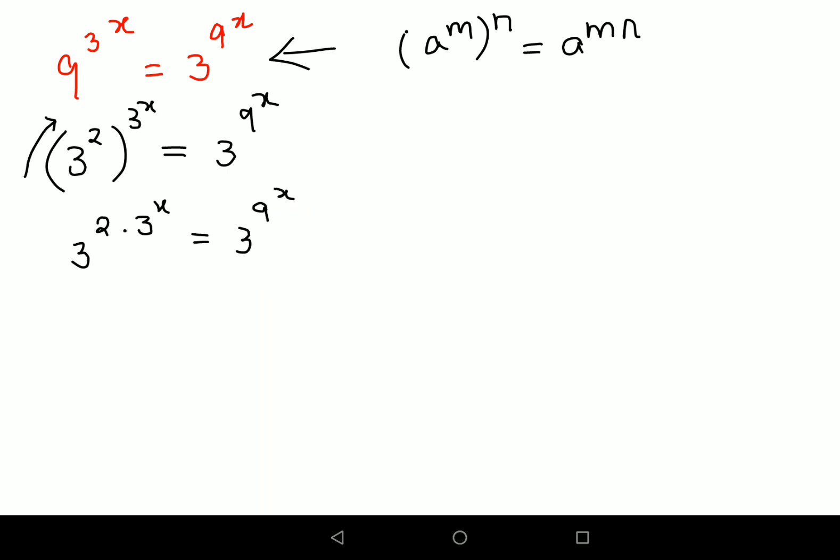Now in this case, since the bases are same, I can directly equate the indices. So this becomes 2 times 3 raised to x, and this becomes just equals to 9 raised to x.